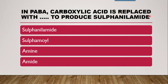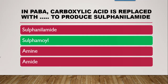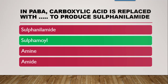Next question: in PABA (para-amino benzoic acid), the carboxylic acid at the para position is replaced with what group to produce sulfanilamide? Whether it is sulfanilamide, sulfamoyl, amine, or amide? The correct answer is sulfamoyl moiety (SO2NH2). When sulfamoyl replaces the carboxylic acid, it forms sulfanilamide.